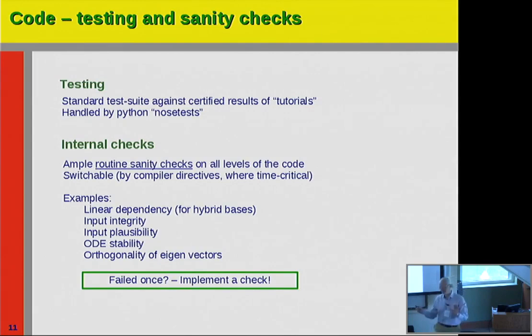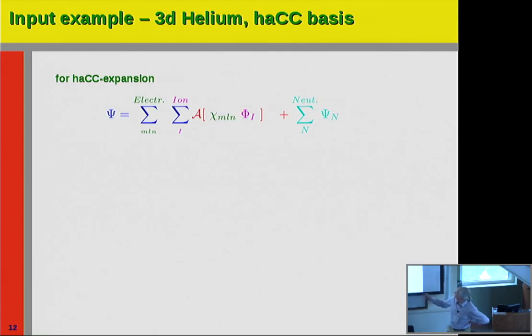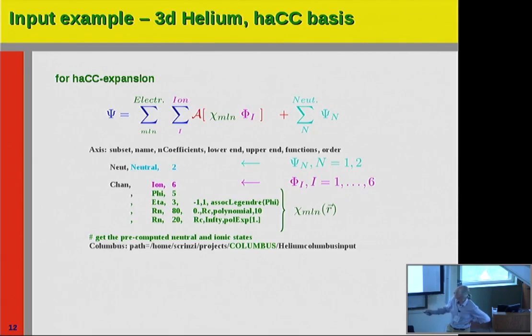That is a slightly more complicated discretization — the HACC discretization. That means an ionic state with one electron with a lot of flexibility glued to it, and maybe adding some neutral states. That is what the input looks like for that one: two neutral states, six ionic states, and this is the freedom for the electron. We have pre-computed data from Columbus.